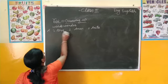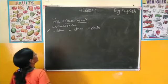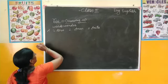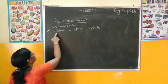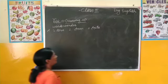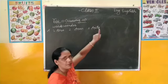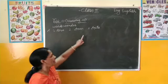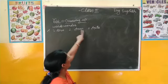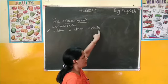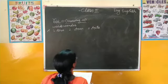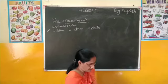अब इसे हम देखेंगे कैसे alphabetical order में। दोनों में A से start होते हैं। Second letter - इसमें M है, इसमें N है। पहले M आता है या N? पहले M आता है, इसलिए हमने Aman को Second Number पे put किया, और Third Number पे Anita को किया है। इसके बाद A से और कोई भी name नहीं है।